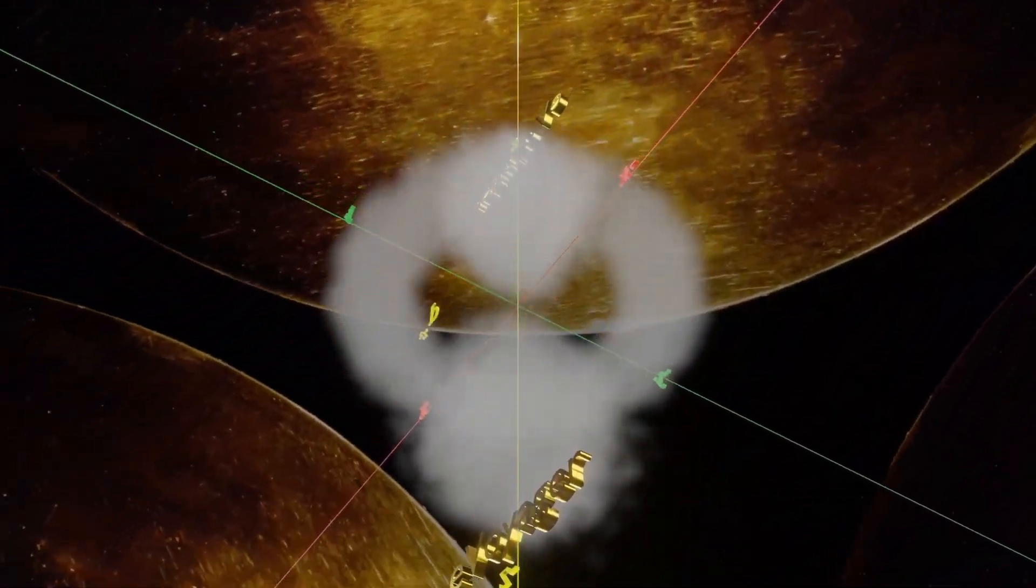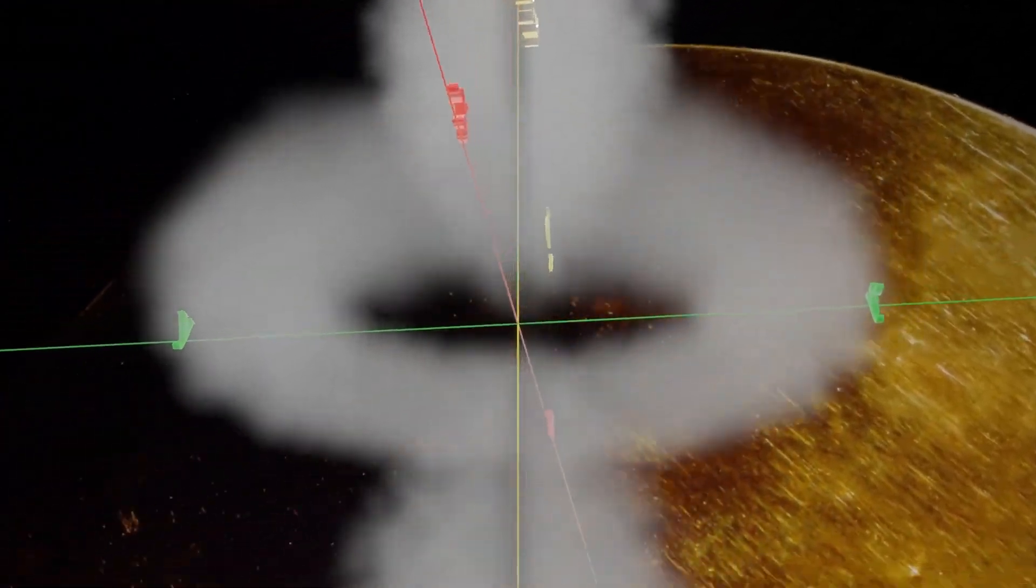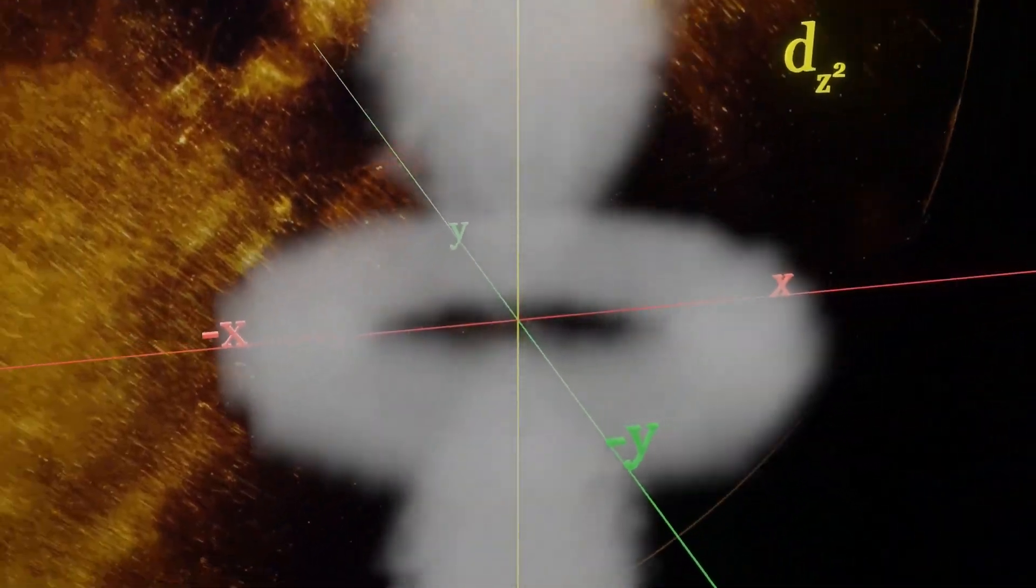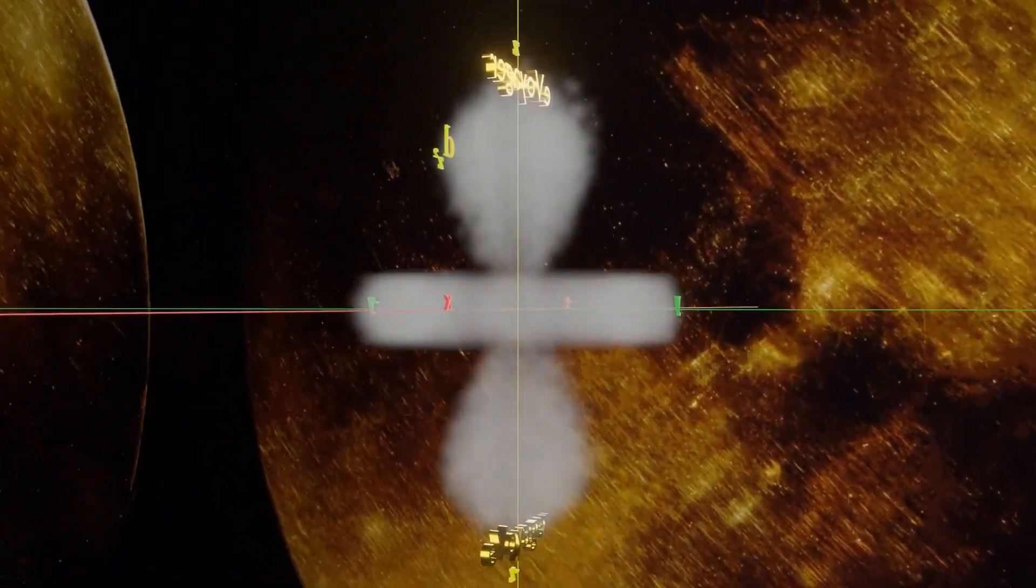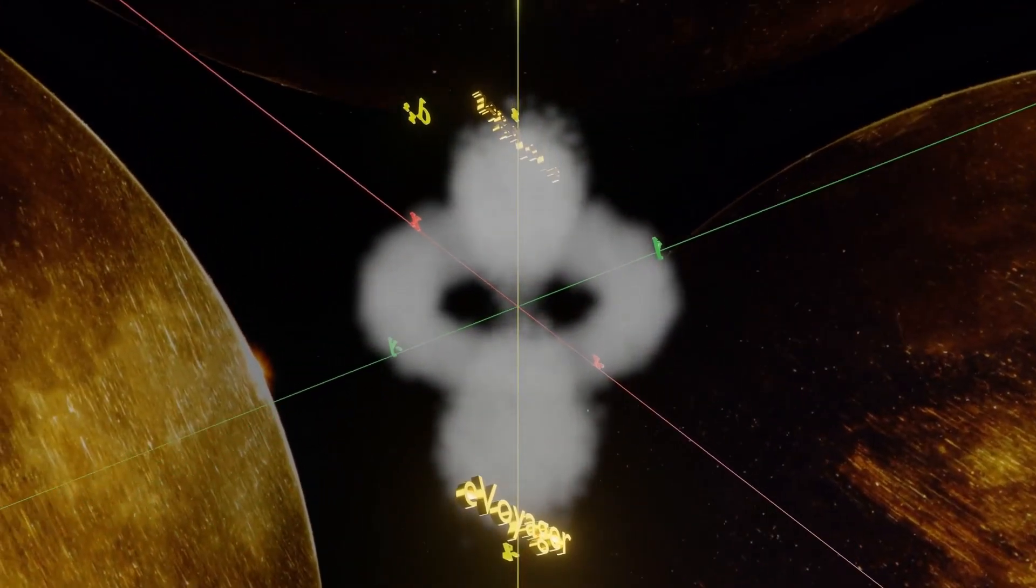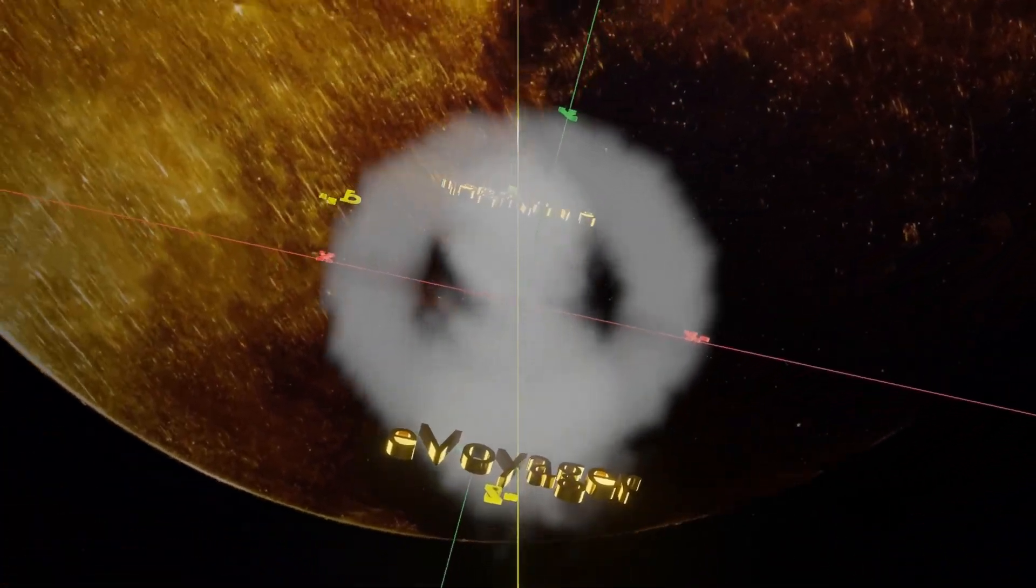Check out the orbital shape and orientation of dxy, dyz, dxz, and dx square minus y square on our channel, as well as our lecture in Hindi for an in-depth explanation. Goodbye and take care.